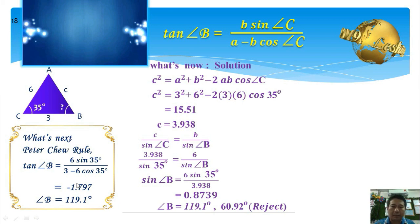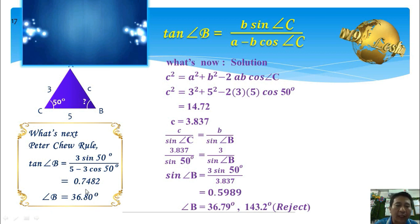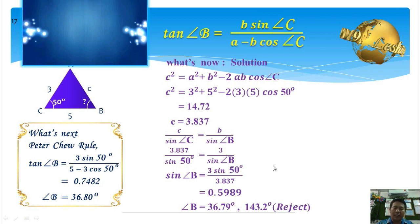Looking at another example, tangent B equals positive 0.7482, so angle B must be an acute angle of 36.80 degrees. For the current solution using cosine rule plus sine rule, since both acute and obtuse angles give a positive sine value, we are not sure whether the angle we are looking for is acute or obtuse. We need an additional calculation to determine this.